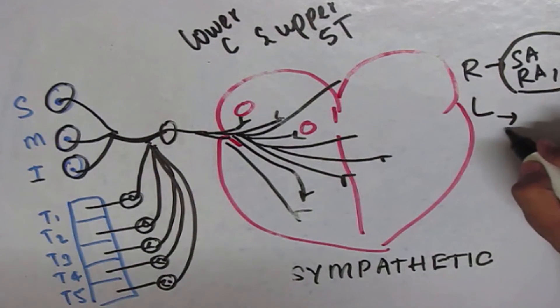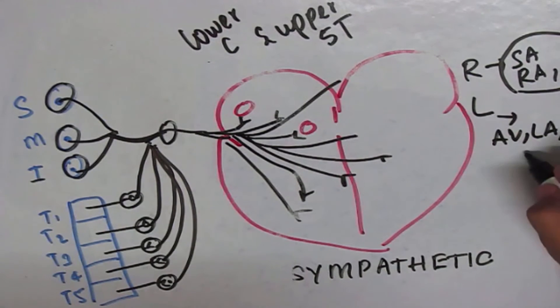The left branch supplies the AV node, left atrium, and the left ventricle. The stimulation of this branch increases the contractility.